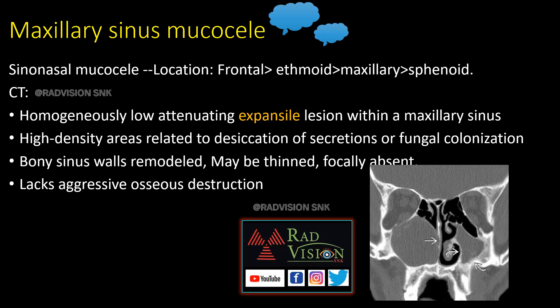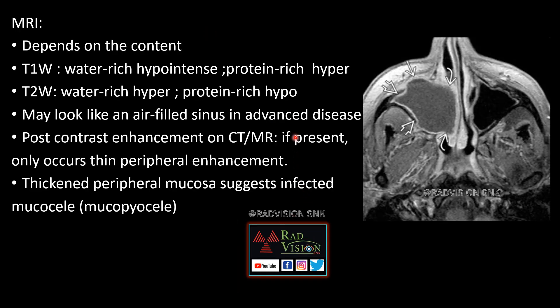Maxillary sinus mucocele is a homogeneously low-attenuating expansile lesion within the maxillary sinus, giving a clouding appearance of the adjacent bony structures, with hyperdense areas related to desiccation of secretions or fungal colonization. Bony sinus walls may be thinned, remodeled, or focally absent, but lacks aggressive osseous destruction. On MRI, it is T1 hypo-intense and T2 hyper-intense if water-rich, or T1 hyper-intense and T2 hypo-intense if protein-rich. Post-contrast shows only thin peripheral rim enhancement. Thickened peripheral mucosa suggests infected mucocele (mucopyocele).